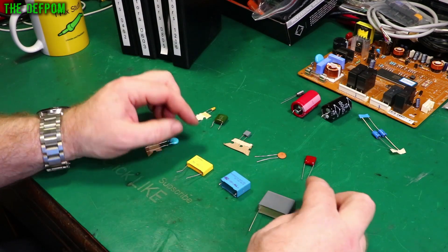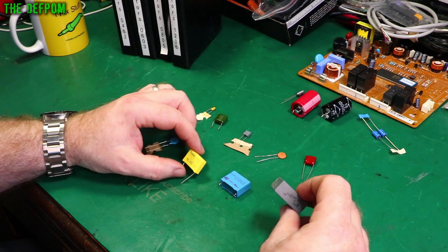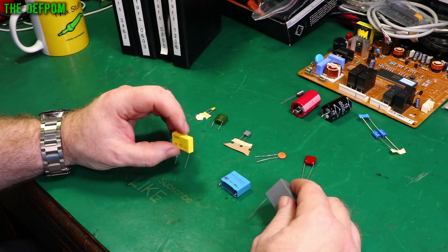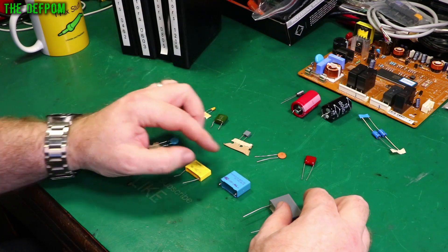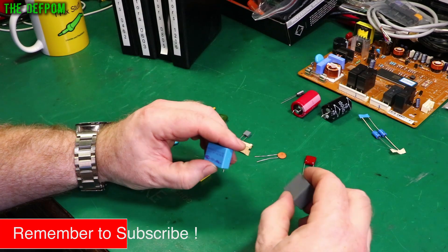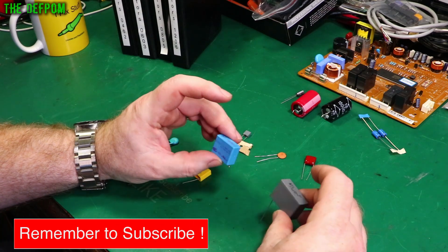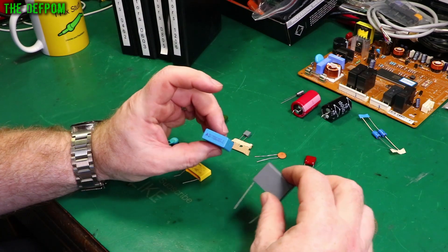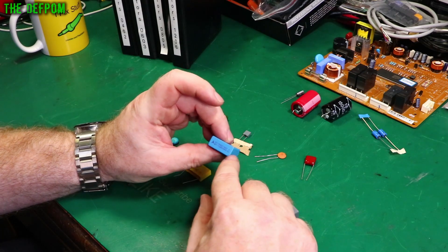These are X class caps. These ones here. Different types. These are basically different values and stuff like that. Got different ratings on them. This is a relatively cheap one, it's a suntan brand. Some other ones here which are better brands. These are more expensive ones. These are X2 caps. This one's 630 volts rated. This one's 5 volts AC rated.